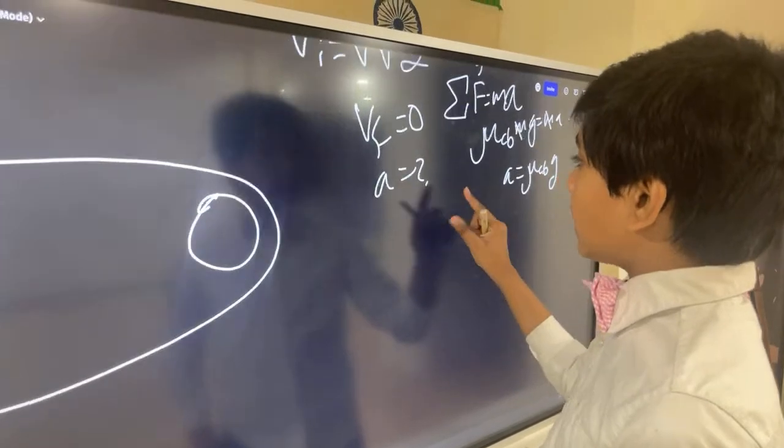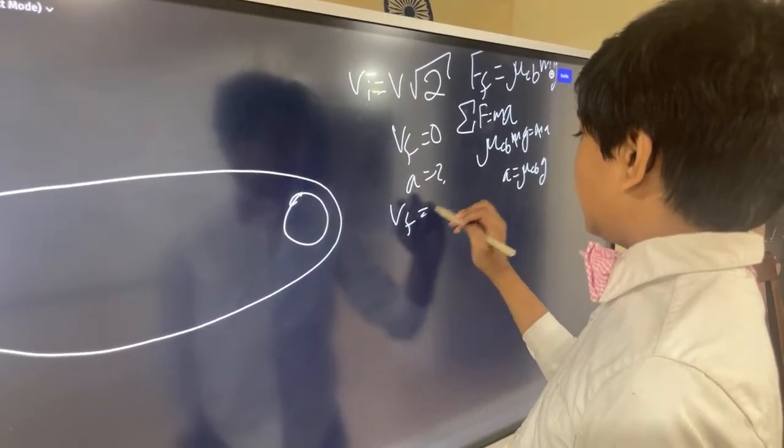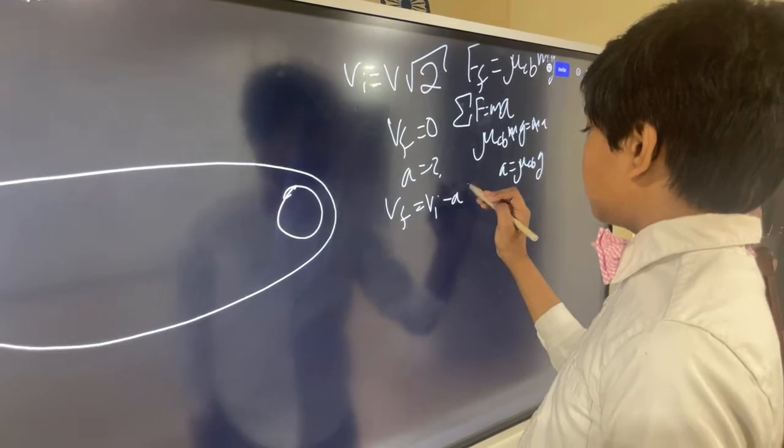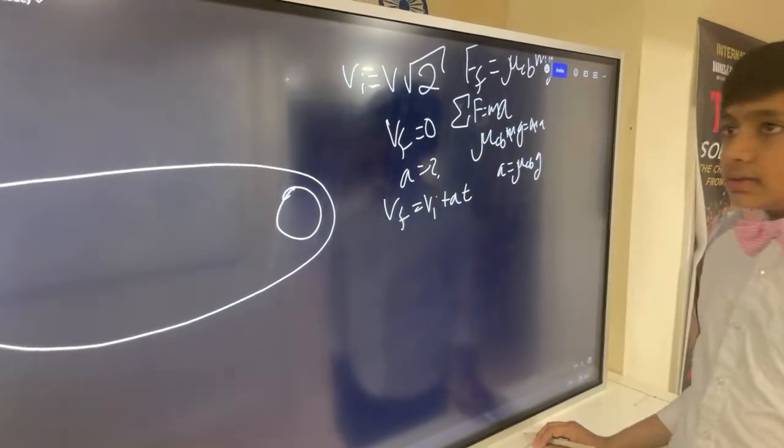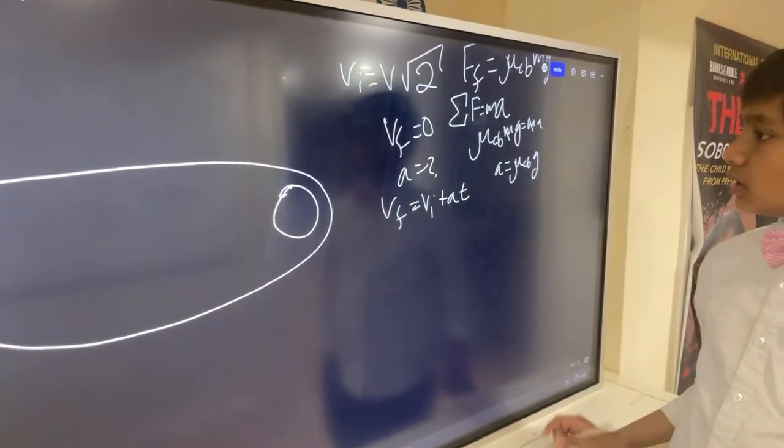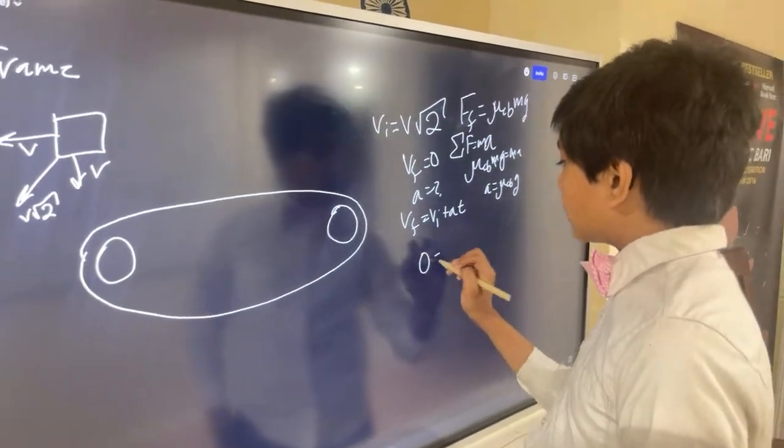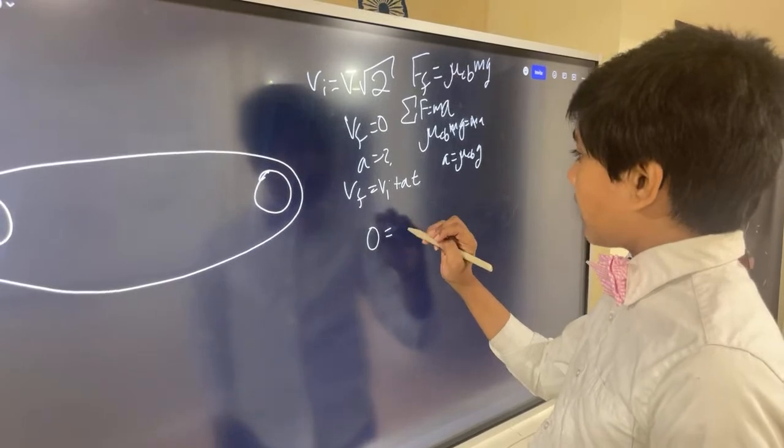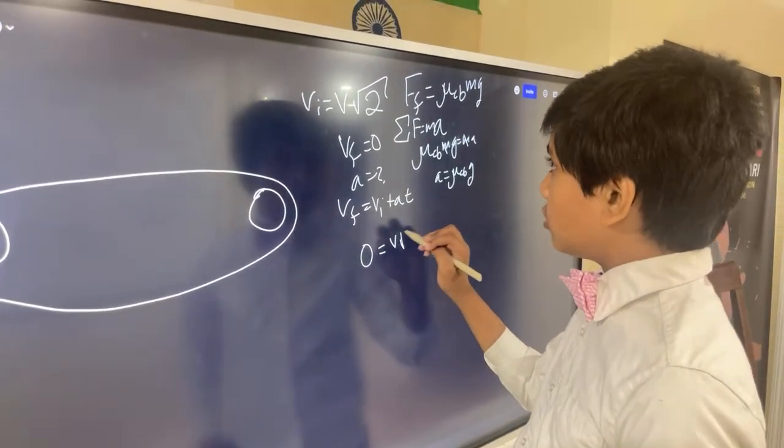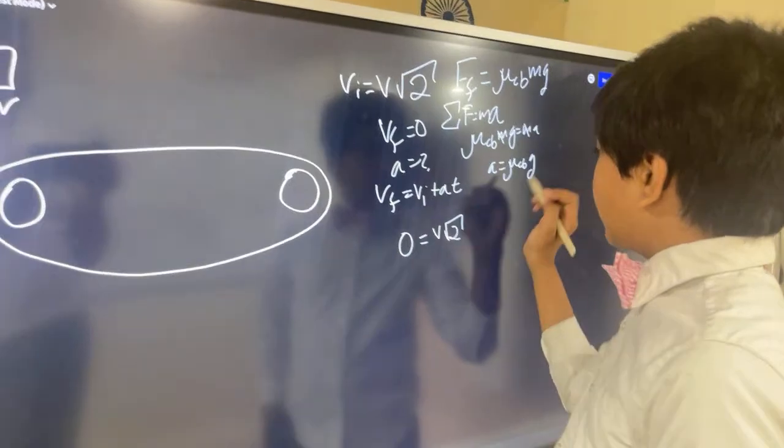So, that means that our time, Vf equals Vi plus At, is going to be this. So, our velocity, our final velocity is 0. We can say our initial velocity is V root 2, and then we have At,